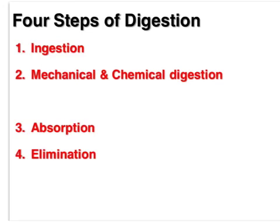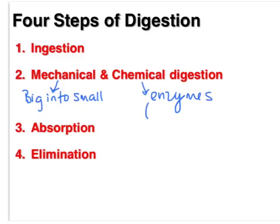This is vodcast one of three in which you'll be viewing the digestive system. There are four steps to digestion: ingestion of food, mechanical and chemical digestion, and elimination. Mechanical digestion involves taking big particles and breaking them into small particles — no new substances are formed. Chemical digestion uses enzymes to break down polymers into their monomer forms, which are then absorbed. Elimination is the removal of waste products that were not absorbed.